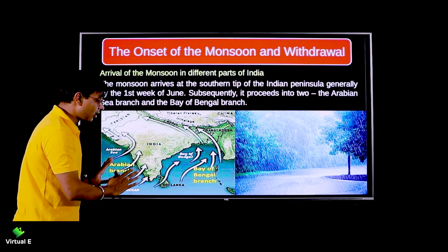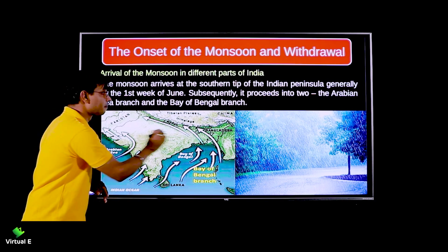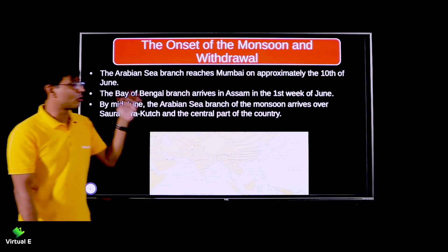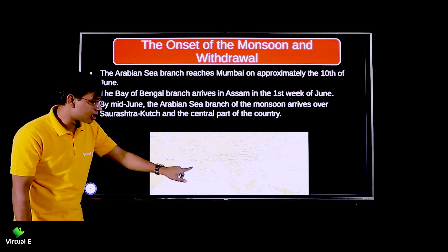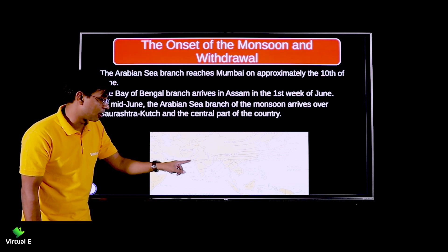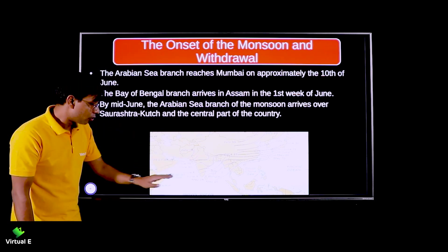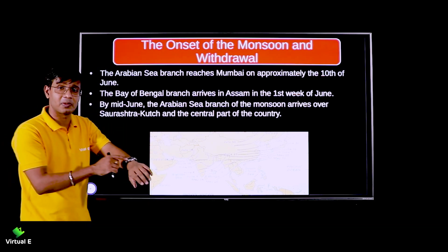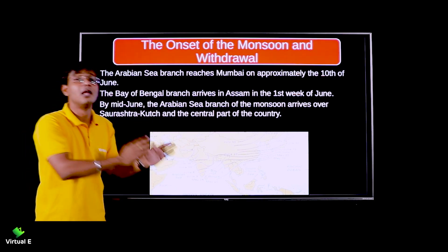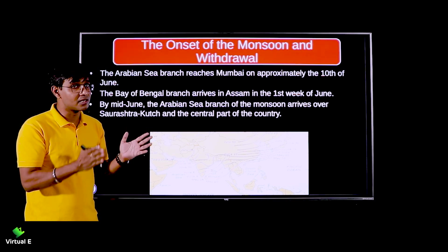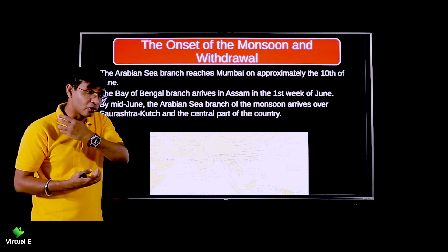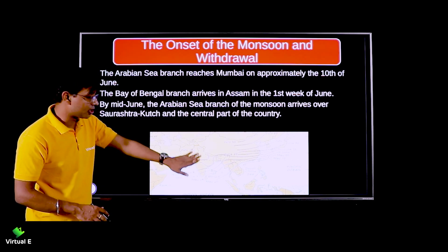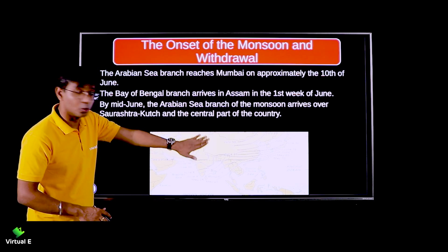When the Arabian Sea branch hits Kanyakumari in the first week of June, the Bay of Bengal branch simultaneously reaches Mizoram, Meghalaya, Tripura, and the eastern part of the country. The Arabian Sea branch reaches Mumbai in approximately ten days, and in fifteen days it covers Gujarat and the rest. These are tentative dates - winds and pressure can cause some variation, but the first week coverage is certain.